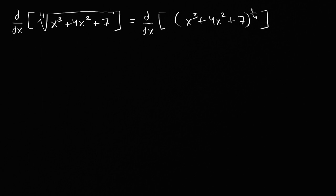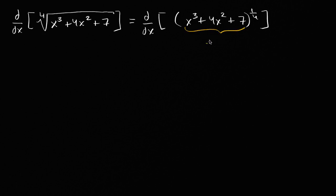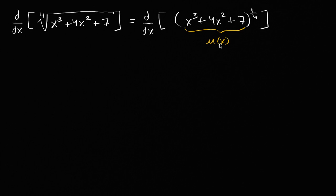Now, how do we take the derivative of this? We can view this as a composite function. What do we do first with our x? Well, we do all of this business — we could call this u of x. Then whatever we get for u of x, we raise that to the one-fourth power. We take the derivative of the outer function with respect to u of x, and multiply that times the derivative of u with respect to x. Let's do that.